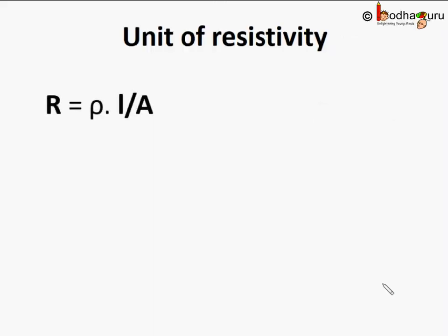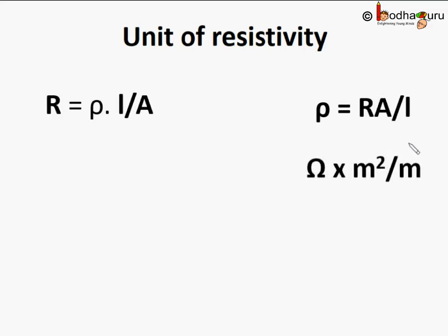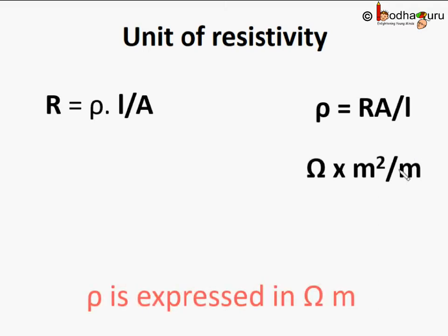The SI unit of resistance is the ohm, denoted by the Greek symbol Ω. Resistivity rho equals R multiplied by A divided by L. Substituting the units — resistance in ohms, area in square meters, and length in meters — we get the unit of rho as ohm times meter squared divided by meter, which simplifies to ohm meter. So ohm meter is the unit of resistivity rho.